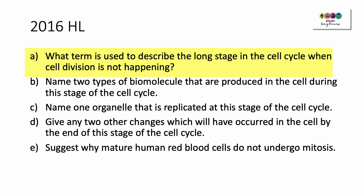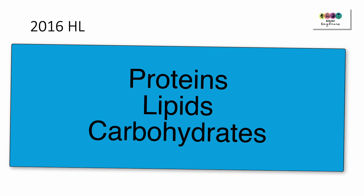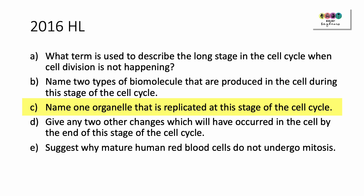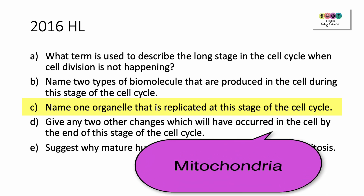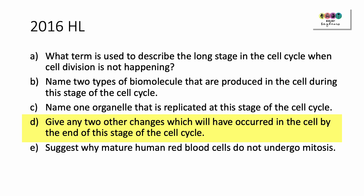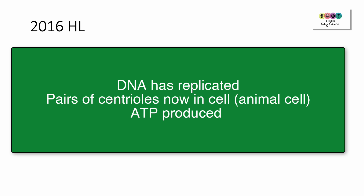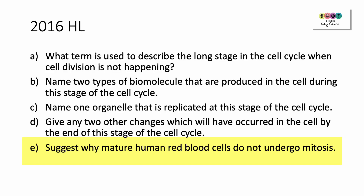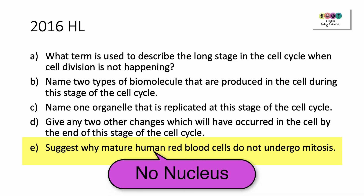2016: What term is used to describe the long stage in the cell cycle when cell division is not happening? This is interphase. Name two types of biomolecule produced in the cell during this stage: proteins, lipids, carbohydrates. Name one organelle that is replicated at this stage: the mitochondria. Give any two other changes which will have occurred by the end of this stage: the DNA has replicated, and in animal cells pairs of centrioles will have appeared. The cell will also have built up a store of ATP to fuel the activities of mitosis. Suggest why mature red blood cells do not undergo mitosis: they have no nucleus, and mitosis is a form of nuclear division.